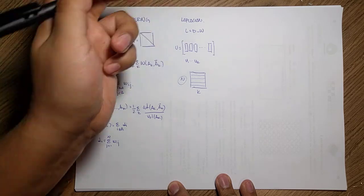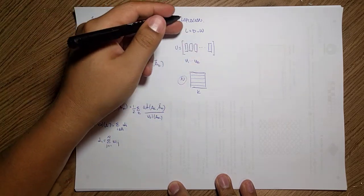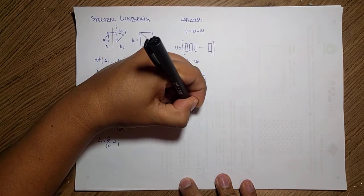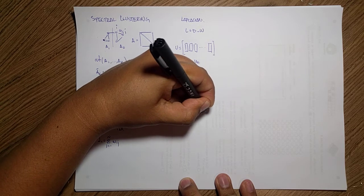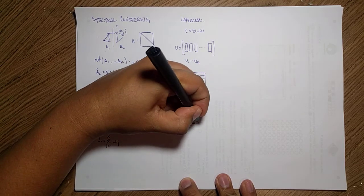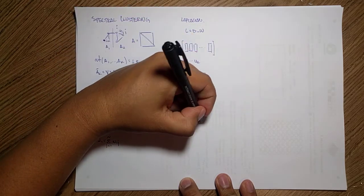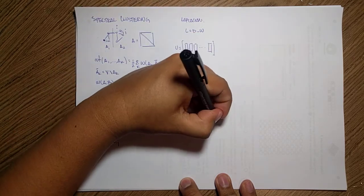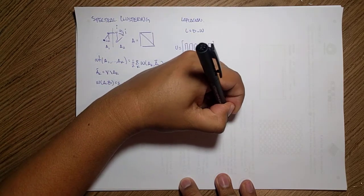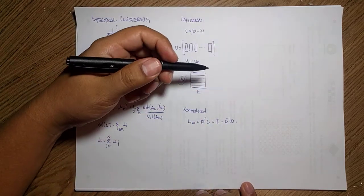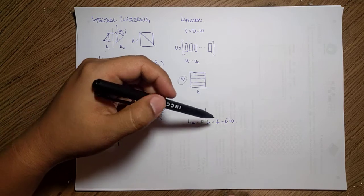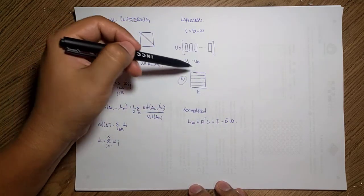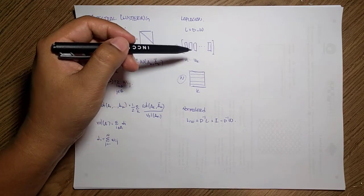The nice thing about this Laplacian is that I have different flavors that I can use. For instance, we can use some normalization here. I have a normalized version in which this Laplacian corresponds, it's kind of similar to random walk. If you normalize using the degree matrix and you plug it back, you obtain the identity minus D^(-1)W. This performs some more stable computation.